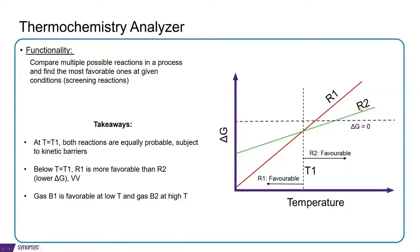Let's consider two reactions R1 and R2, and we compute their reaction free energy as a function of temperature. At temperature T1, both reactions are equally probable. Below T1, R1 will be favorable, and above T1, R2 will be favorable. This is the type of conclusions that we can derive from thermochemistry analyzer.